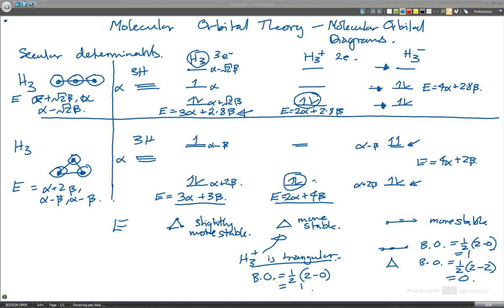Okay. In this case, for the neutral, you can work that out yourself, but it's going to be, again, a bond order of 1 for the linear and a bond order of a half for the neutral H3 molecule in a triangular form.